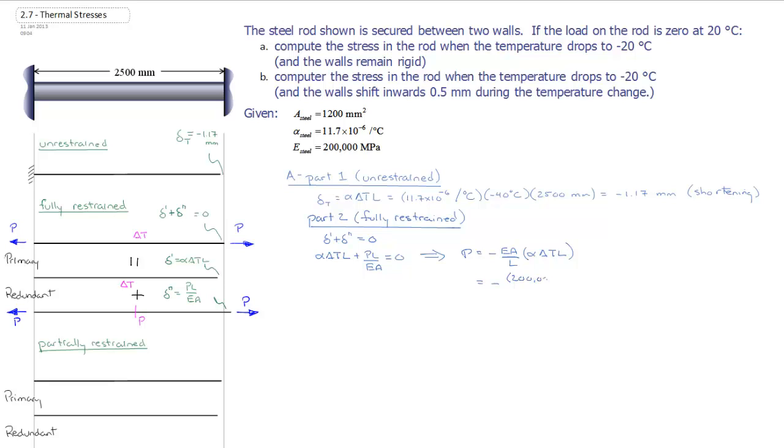And if I go ahead and substitute in our numbers, we have 200,000 megapascals for a steel rod. Its area was given in the question as 1,200 millimeters squared.